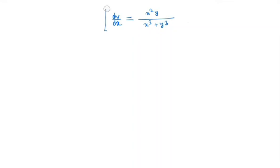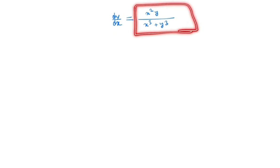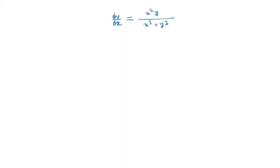Note that the function given on the right hand side of the equation, x²y divided by (x³ + y³), is a homogeneous function of degree 0. Because in the numerator x²y has degree 3, and in the denominator x³ + y³ also has degree 3, since each term x³ and y³ has degree 3.